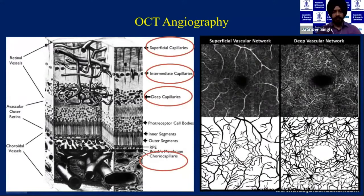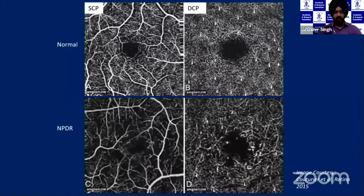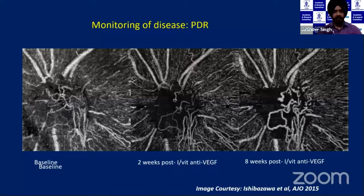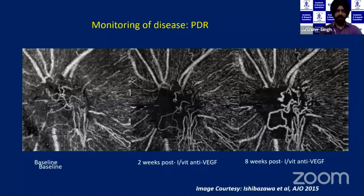OCT angiography is a new addition to our diagnostic armamentarium, displaying the superficial and deep capillary plexus separately. The deep capillary plexus could not previously be imaged by fluorescein angiography. In normal versus non-proliferative diabetic retinopathy, you can see microaneurysms and widening of the foveal avascular zone. Using the vitreoretinal interface slab, OCT angiography also helps monitor disease: after anti-VEGF, new vessels on the disc surface regress but recur, indicating that anti-VEGF monotherapy alone may not sufficiently manage proliferative diabetic retinopathy.